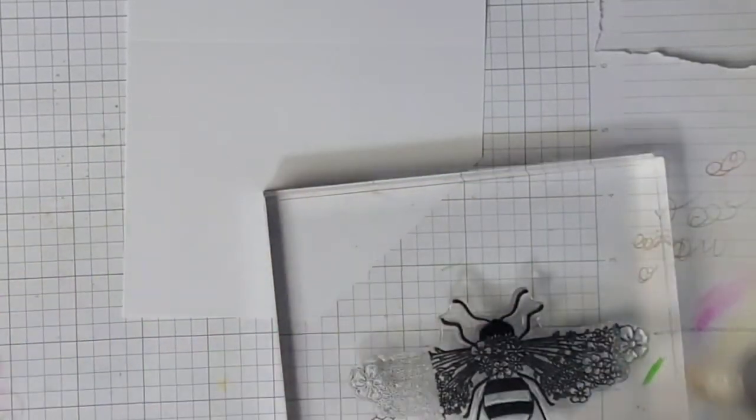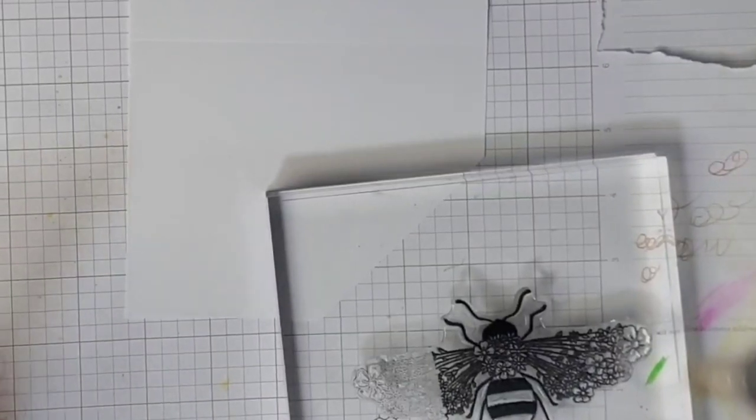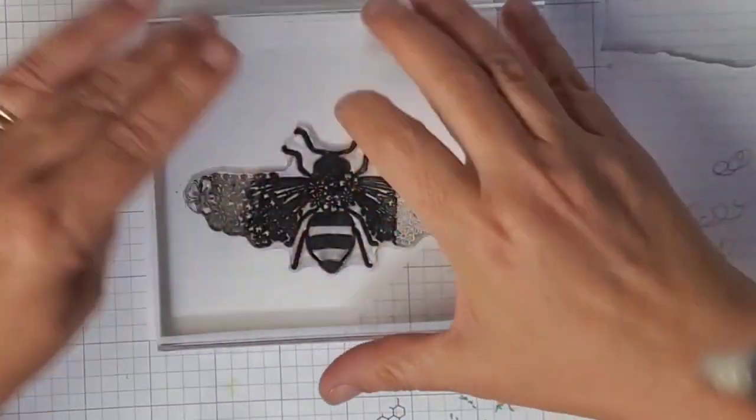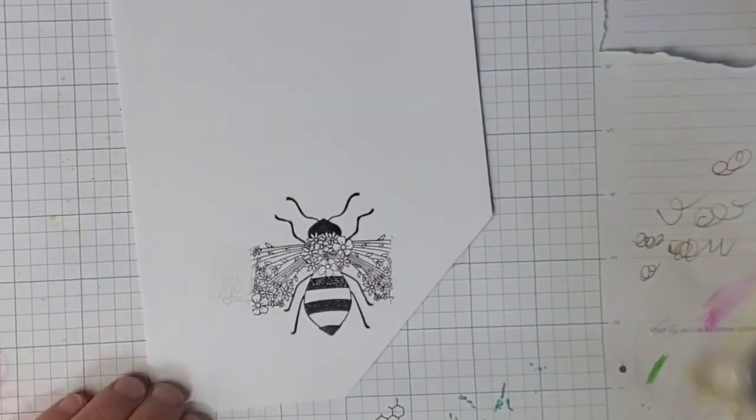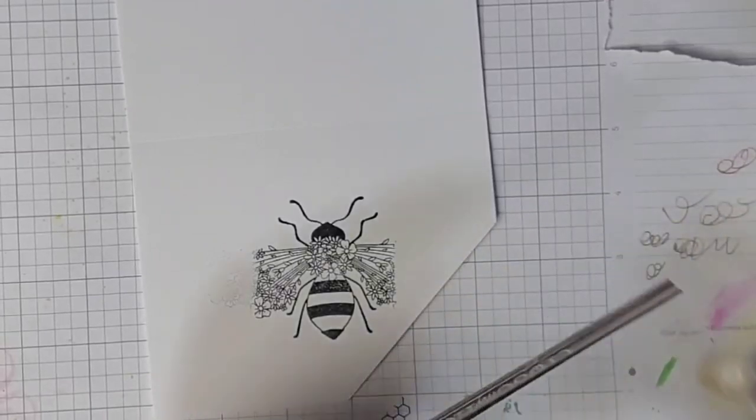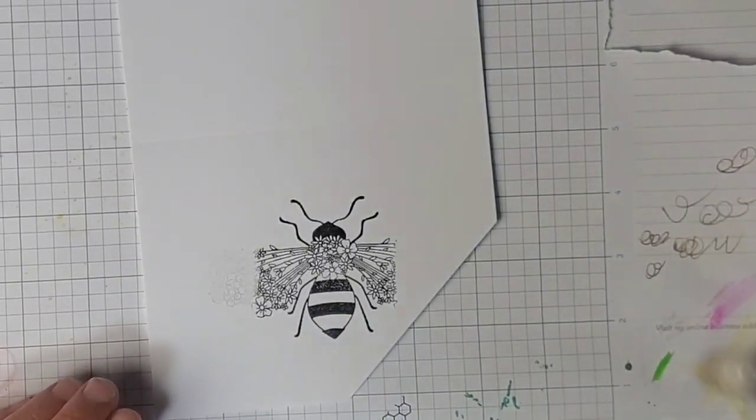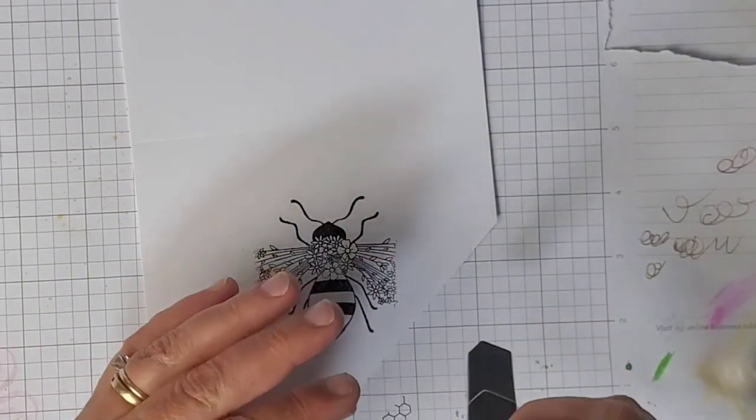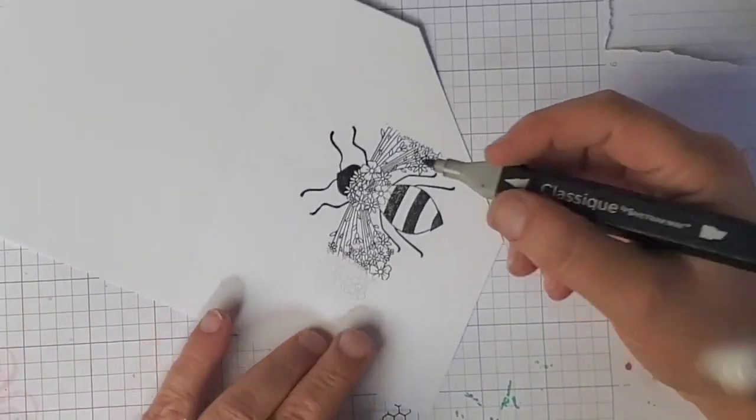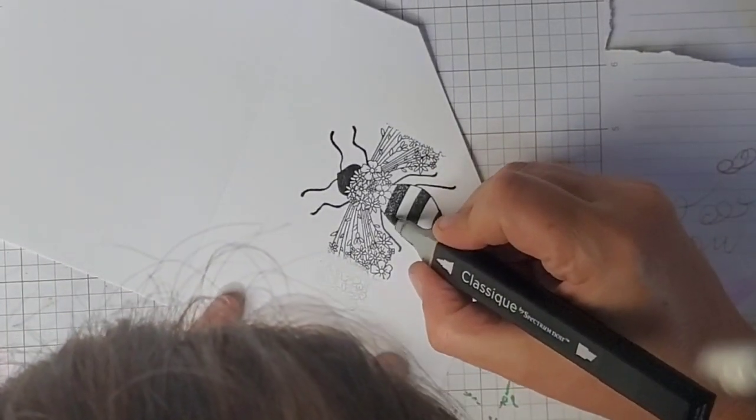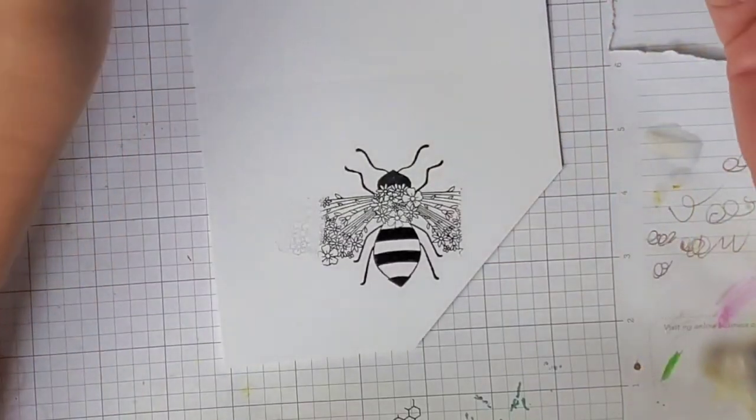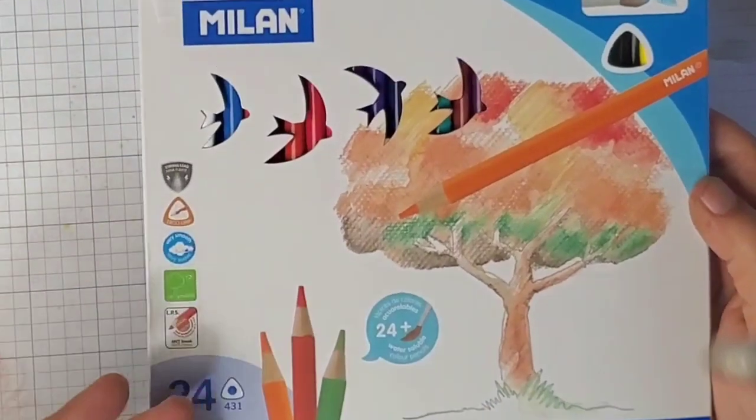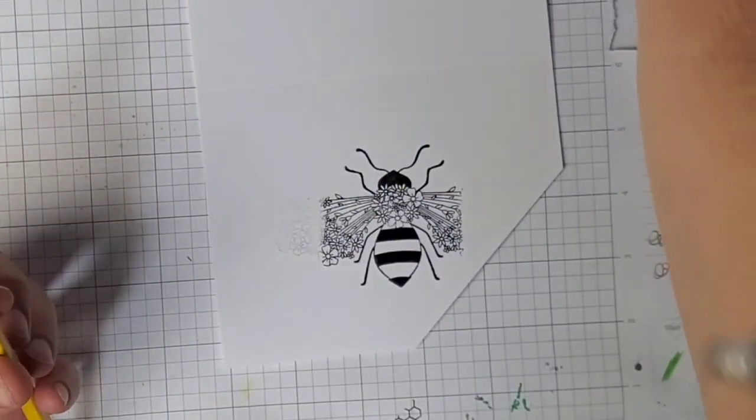Okay, so I'm going to get him all inked up. I didn't stamp super duper well. I'm going to go ahead and take a black marker right here, it's True Black from the Spectrum Noir. I'm just going to color this in a little bit because I don't like that.